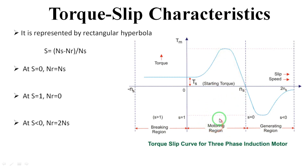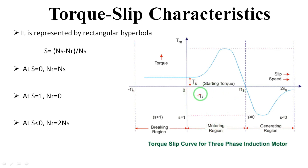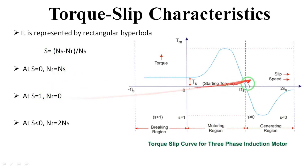Coming back to the first point: when the motor starts, it is under motoring condition and the slip decreases slowly from one to zero. When the motor speed reaches synchronous speed, the slip becomes zero. As the rotor speed increases to synchronous speed, the slip equals zero, and at this point the torque also decreases to zero, the minimum position.